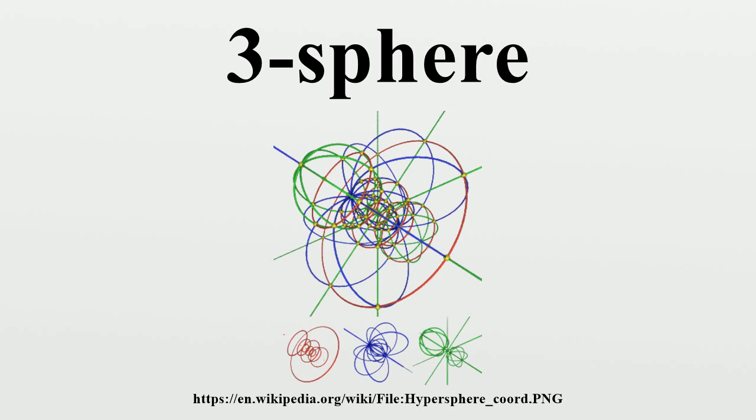In coordinates, a three-sphere with center and radius R is the set of all points in real four-dimensional space. The three-sphere centered at the origin with radius 1 is called the unit three-sphere and is usually denoted S3.